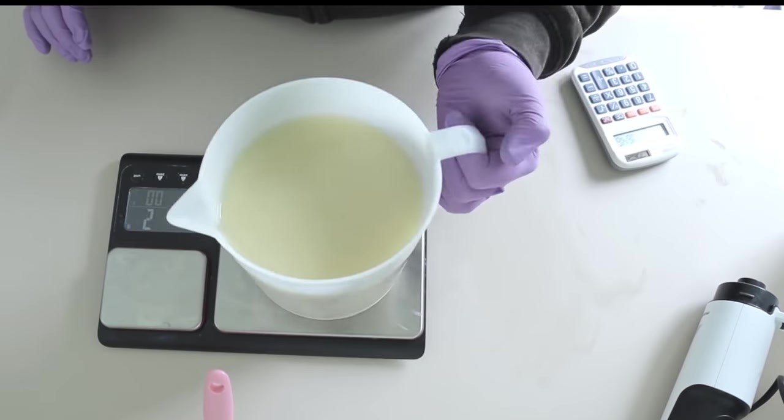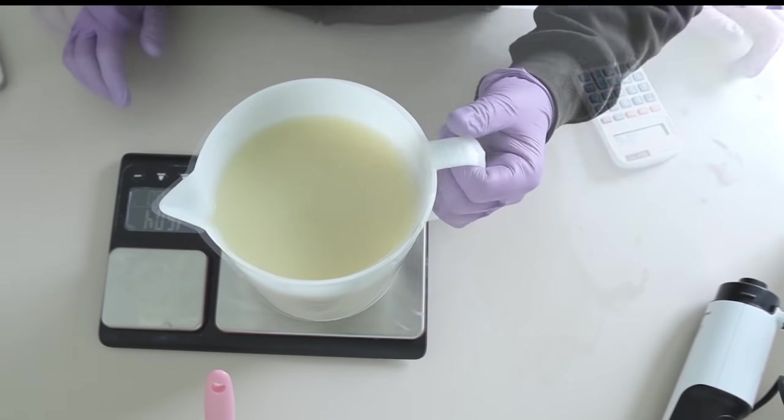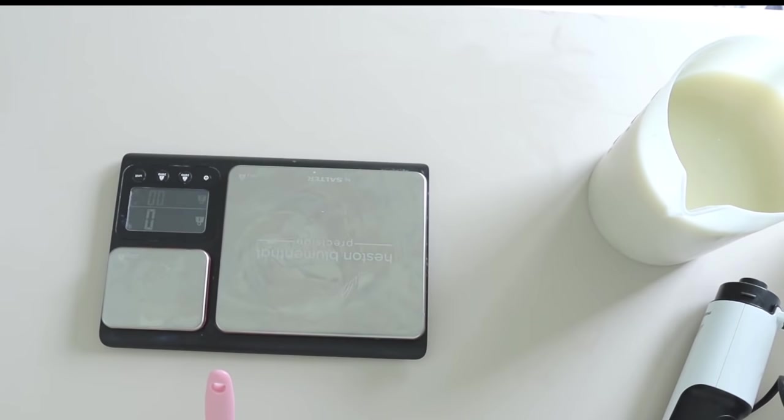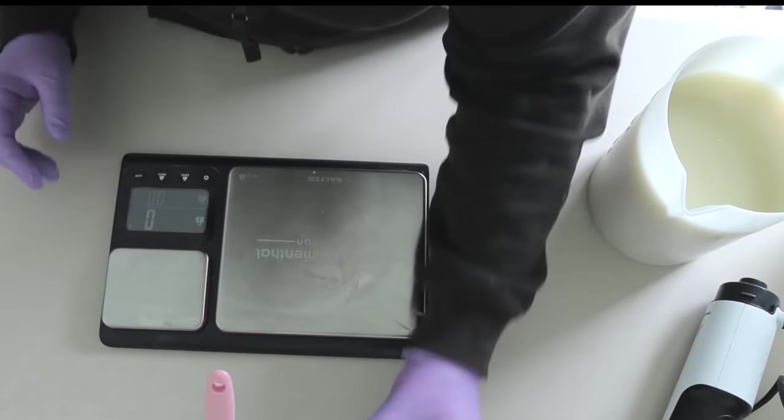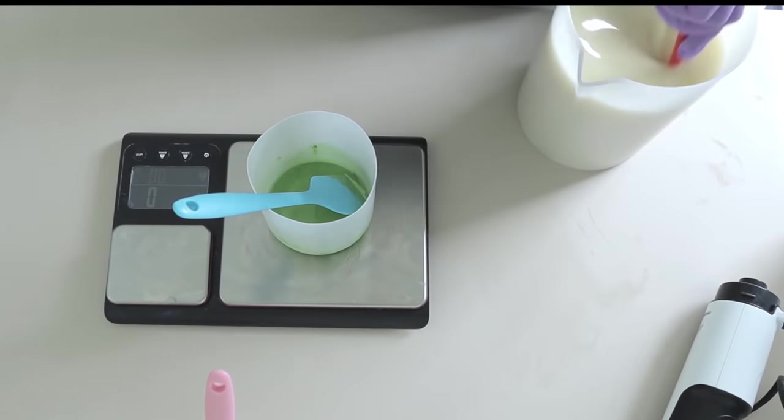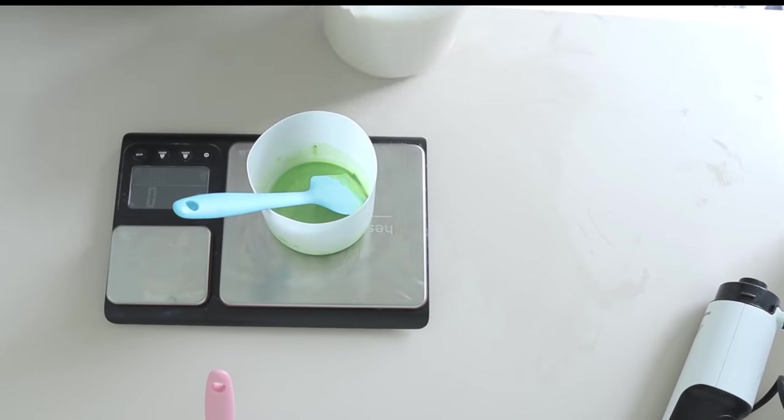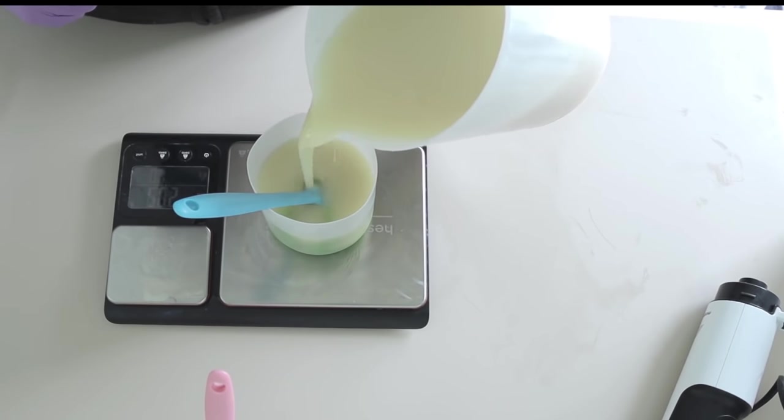So I'm just going to check the weight of my batter. Now I already know the weight of my jug, I have it engraved on all the sides of them, so I'm just going to take that off the weight and then divide that into four even parts for this pour for the peacock swirl.